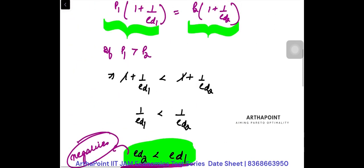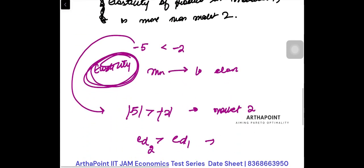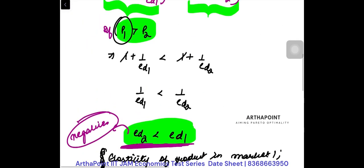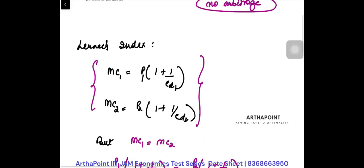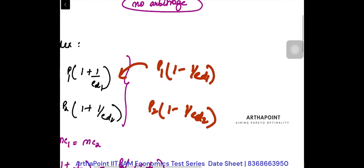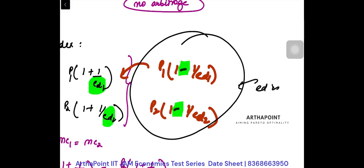This makes sense economically too — you can charge a higher price only if people don't switch from your product, which means lower elasticity. If this becomes confusing, rewrite the Lerner's index formula as P1 times (1/(1 minus ED1)) equals P2 times (1/(1 minus ED2)). The negative sign in the denominator ensures the sign of elasticity is accounted for, and now you can plug in elasticity in absolute positive values.